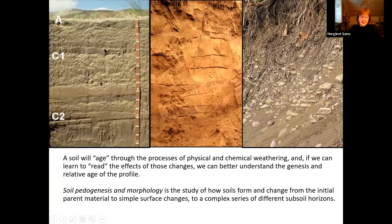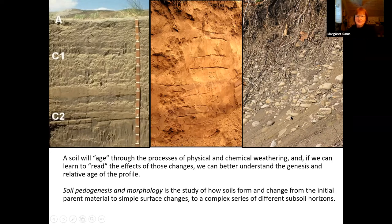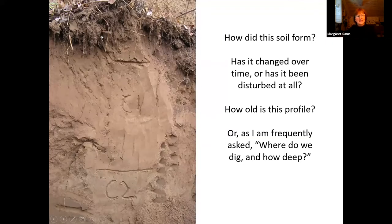A soil will age through the processes of physical and chemical weathering. If we can learn to read the effects of those changes, we can better understand the genesis and the relative age of the profile. Relative. Soil pedogenesis and morphology is the study of how soils form and change — the initial parent material begins to change through the processes of soil pedogenesis if it is exposed to weathering. You can end up with a very complex series of different subsoil horizons, or it can be brand new parent material from top to bottom. So: how did this soil form? Has it changed over time? Has it been disturbed? How old is this profile? That's the main question I get all the time. Or as I am frequently asked: where do we dig and how deep?